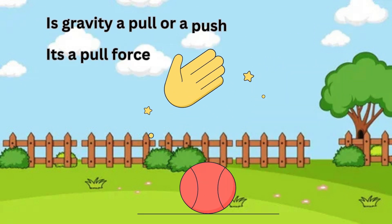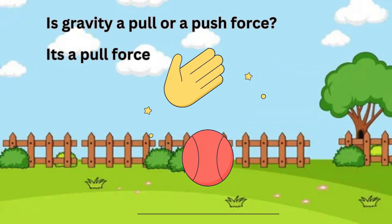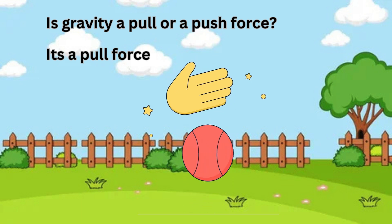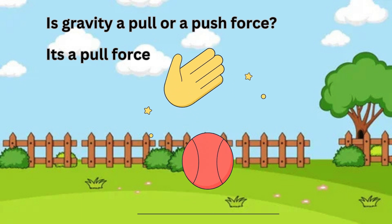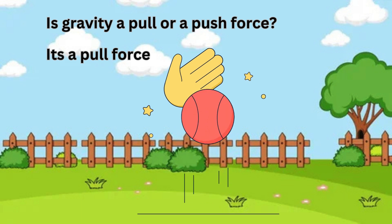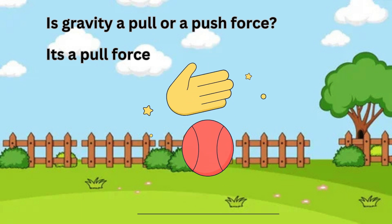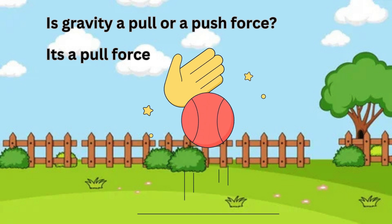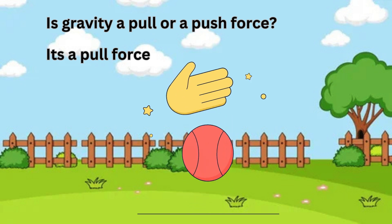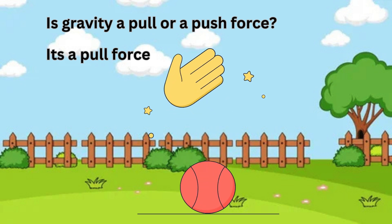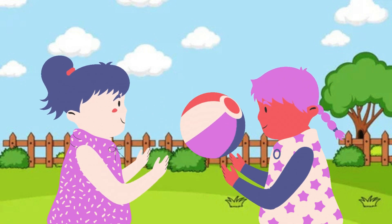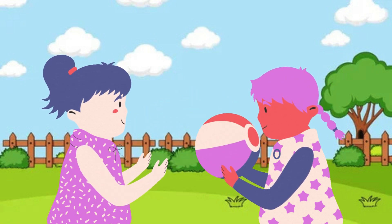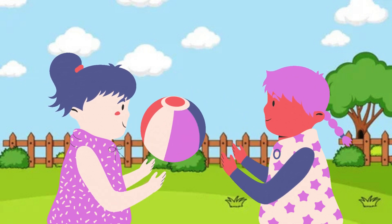Is gravity a pull or a push force? Gravity is the force that pulls all objects towards the earth. Gravity works on both objects at rest and objects that are moving — a force that's pulling you and me.